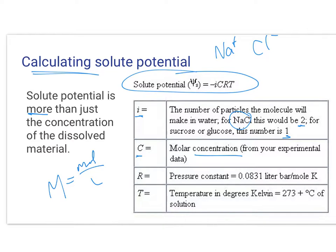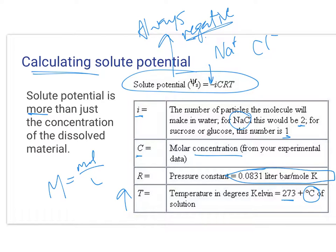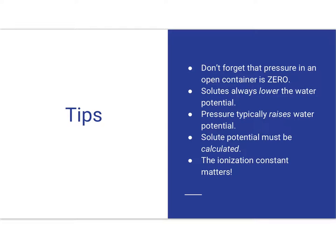R is a pressure constant. This is also on your formula sheet. So you don't need to memorize it, but it is good to have as much committed to memory as you can. And then T is the temperature in Kelvin. And Kelvin is 273 plus your temperature in degrees Celsius. So as we increase temperature, those particles move faster. They have more energy. And so the potential for moving also increases. So remember though, there's a negative right there in front of this because solute potential is always negative. We are decreasing the likelihood that water is going to move. So do not forget to negate your product.